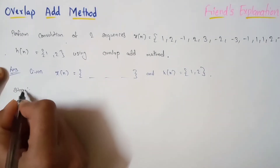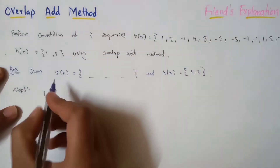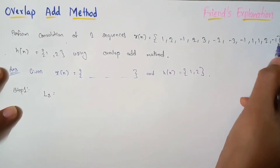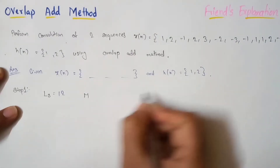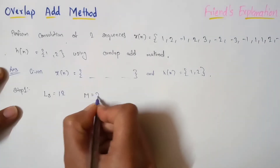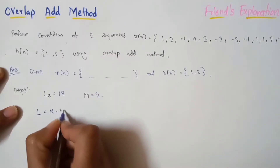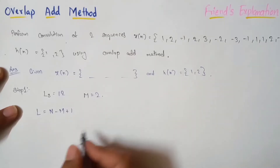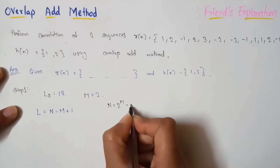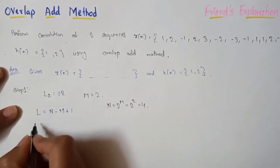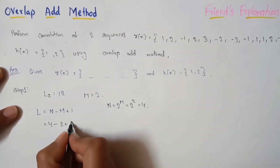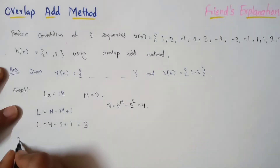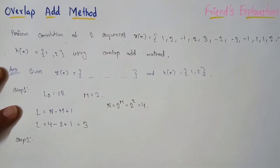In Step 1, we find L_s, the length of x(n), which is 12. M is the length of the impulse response, which is equal to 2. We then calculate L = N − M + 1. Here N = 2^m = 2² = 4, so L = 4 − 2 + 1 = 3. So the L value is 3.